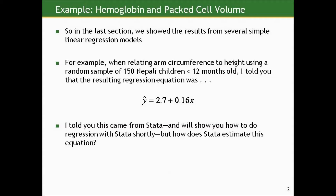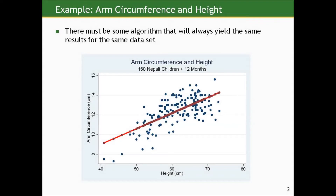In the last section, we showed results from several simple linear regression models. For example, when relating arm circumference to height using a random sample of 150 Nepali children less than a year old, the resulting regression equation was given. I told you this came from Stata, and I will show you how to do regression with Stata shortly. But I wanted to give you some sense of how Stata estimates this equation — how Stata or any other program estimates the equation. In theory, if I give this data set to different statistical packages, they should all come up with the same answer. There must be some algorithm that will yield the same results for the same data set.